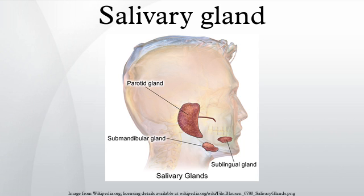In the duct system, the lumina are formed by intercalated ducts, which in turn join to form striated ducts. These drain into ducts situated between the lobes of the gland. These are found on most major and minor glands. All of the human salivary glands terminate in the mouth, where the saliva proceeds to aid in digestion.